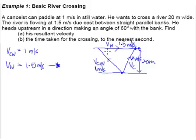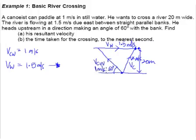Now is the time to look for an angle inside the triangle. We read the information and find the 60 degrees — the direction upstream at 60 degrees with the bank. This refers to the angle between the aiming vector and the bank being 60 degrees. But this 60 degrees is outside the triangle. However, because it's parallel banks, we can bring the 60 degrees inside the triangle as well. So we have a triangle with a 60-degree angle inside.